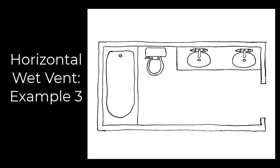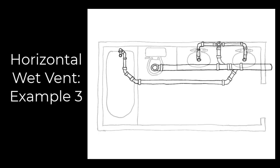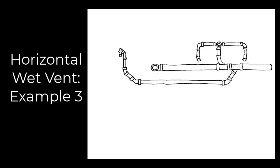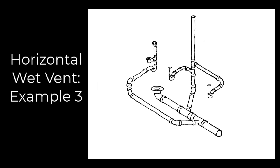Let's have another look at this same bathroom group from a different approach. This time the drain is going to be leaving from the toilet and heading towards the right. We're going to have the lavatories branching off and the tub downstream from that. Once again, you see how the tub branches below the lavatory connection so that it has an individual connection to the wet vent, which is downstream from the lavatory. That does mean a little more pipe as it comes around the toilet, and keep in mind there is a distance limitation on a trap arm for that to work.